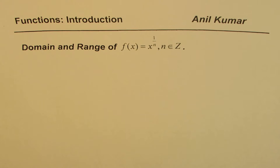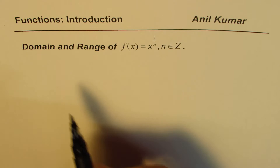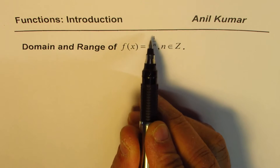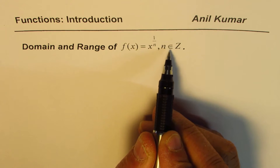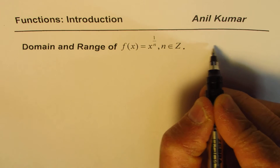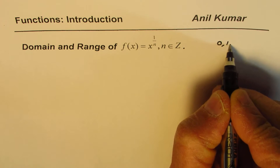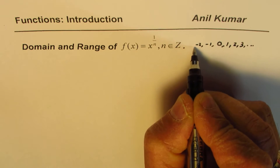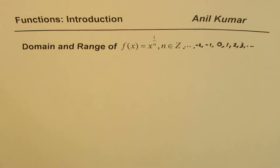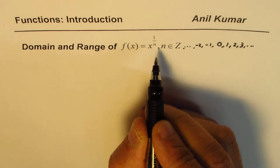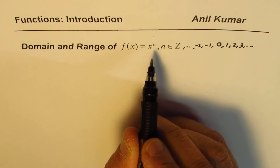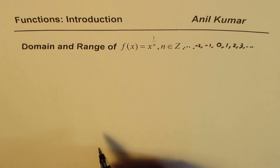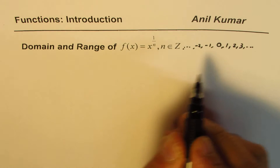I'm Adil Kumar and in this video we'll try to understand domain and range of the function f(x) = x^(1/n) where n belongs to integers — that is to say n could have values like 0, 1, 2, 3 and so on, and also -1, -2, -3 and so on. So all integer values n can have. We'll investigate what type of function this is and what should be its domain and range.